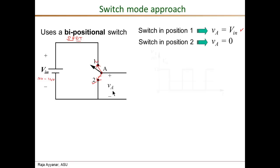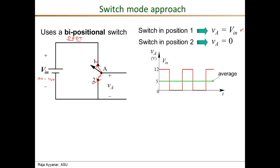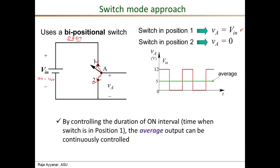If we plot the VA waveform versus time — shown here for a 12-volt input condition — when the switch is in position one, the red waveform equals 12 volts; when in position two, it is zero. The green waveform is the time average of VA. By controlling the duration for which the switch is in position one — called the on interval — relative to the off interval, we can control the average of the switching waveform. That is the key concept of this type of power converter.